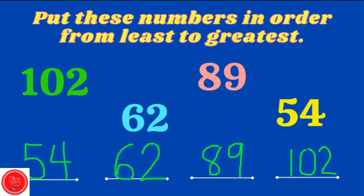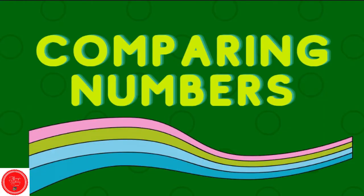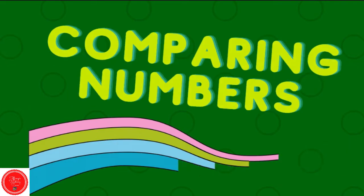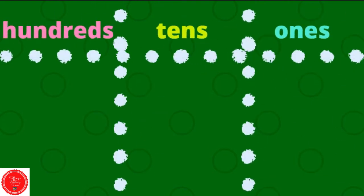Nice work. Let's start with comparing numbers. Before we do that, let's review place value. When we have three-digit numbers, the first number represents the hundreds place. The middle number is the tens place. And the last number is the ones place.